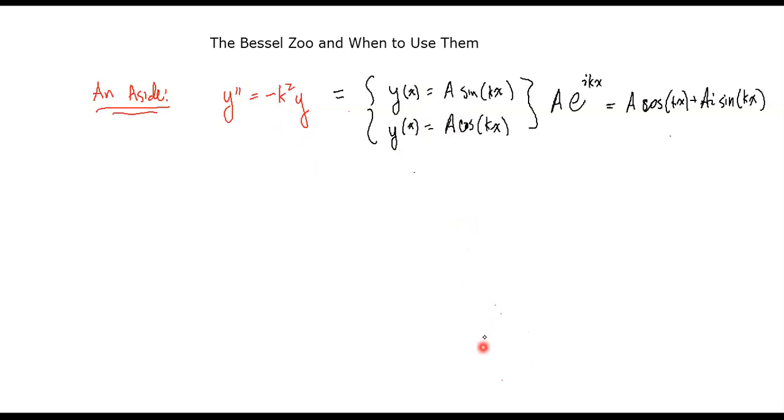There's a little bit of either math magic you can do with the sine and the cosine, or you can think about it as solving a related differential equation. I could think about solving y double prime equals plus k squared y. And it turns out those two solutions are hyperbolic sine, so sinh kx, and y of x equals cosh hyperbolic cosine kx. All we did was we modified the minus in the above differential equation to a plus.